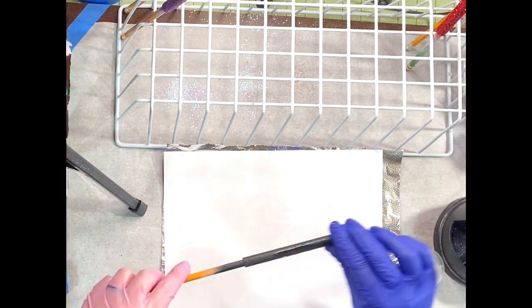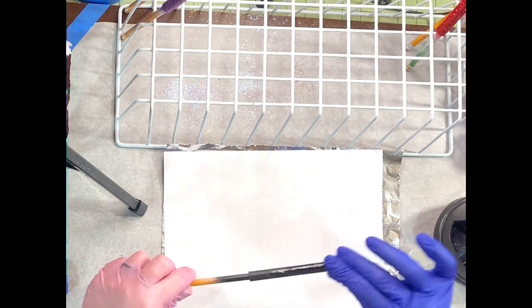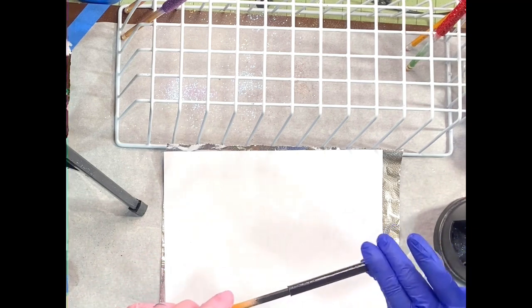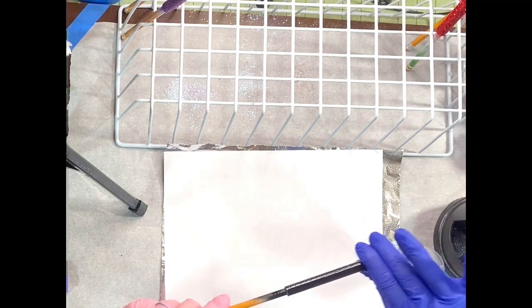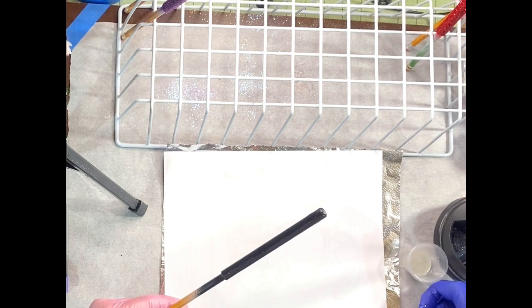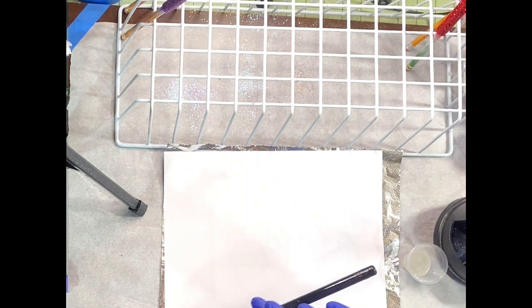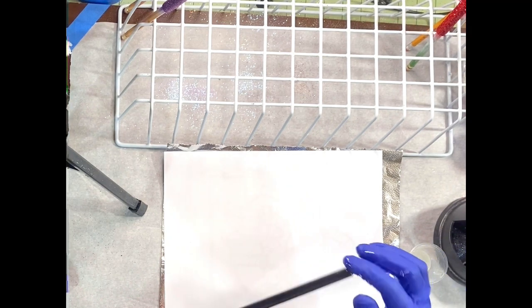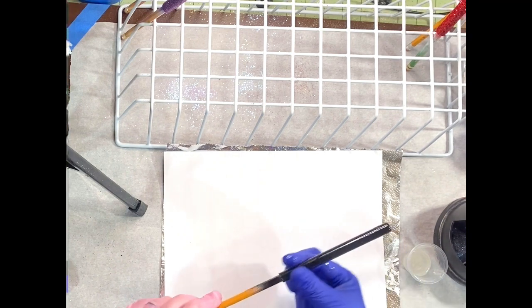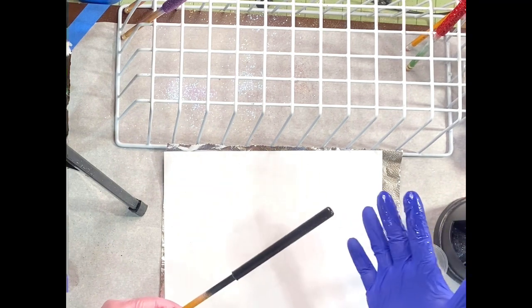Then you're going to take the smallest amount of epoxy and do the thinnest coat you possibly can to get your glitter to stick. I had 5 milliliters total, so 2.5 of each part, and I epoxied over six pens and I had 4 milliliters left over. That's how thin of a coat I do.